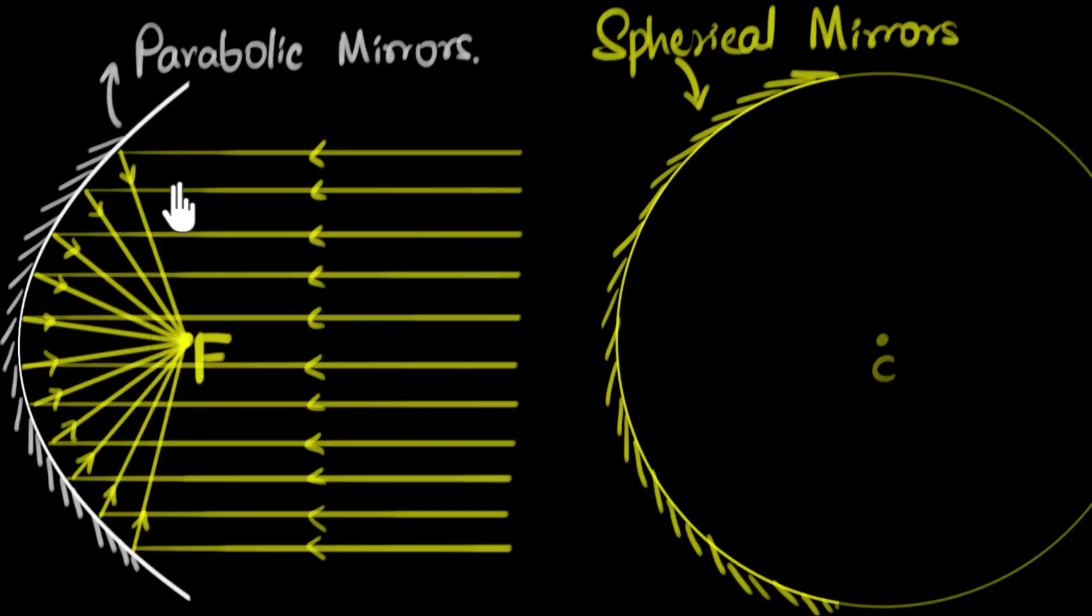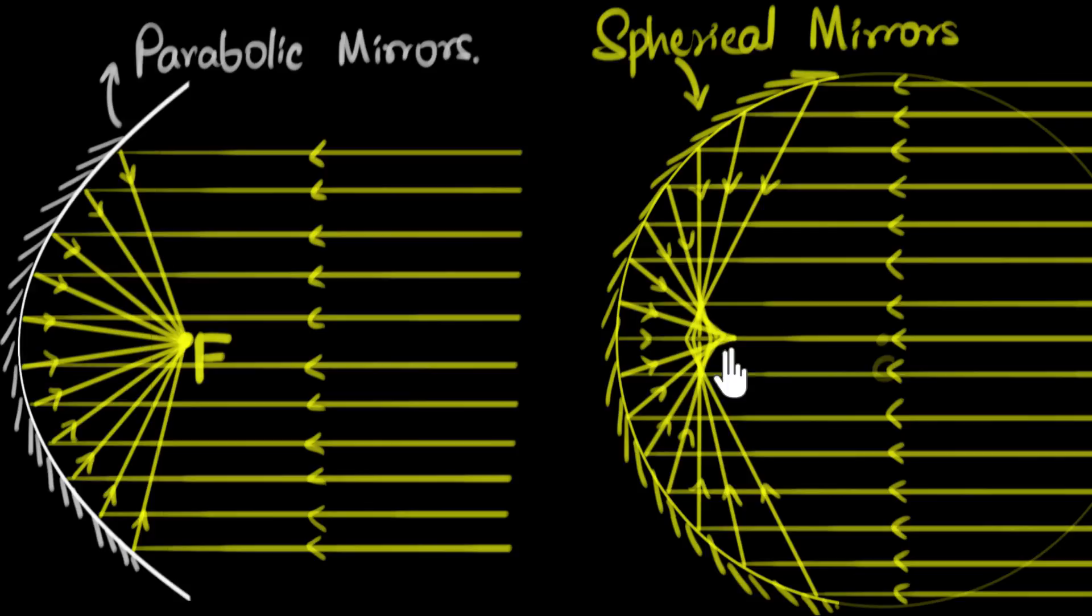But here's the thing: we just saw that parabolic shape is what is needed to focus all parallel rays of light to a single point. So what happens over here? Well, let's throw parallel rays and see what happens. We clearly see that the rays of light are not getting focused at a single point. And that shouldn't be too surprising because we've already discussed that the only shape that can do that are parabolas. So obviously, anything other than parabola, like a sphere, will not be able to focus the parallel rays of light to a single point.